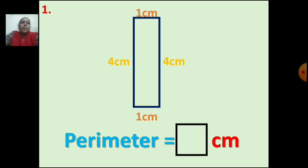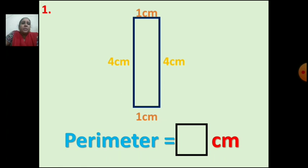How to find the perimeter of a rectangle? You have to add the length of all the sides. So if you add all the sides: 4 plus 4 is 8, and 1 plus 1 is 2. So 8 plus 2 is 10. The perimeter of this figure is 10 cm.